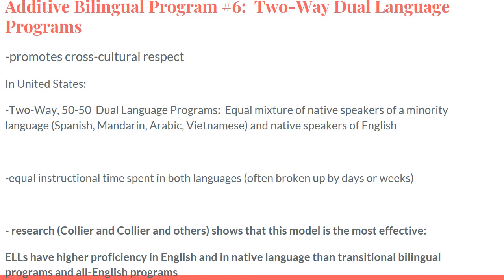These programs promote cross-cultural respect. An example is two-way 50/50 dual language programs with an equal mixture of minority language native speakers — such as Spanish, Mandarin, Arabic, or Vietnamese — and native English speakers, with equal instructional time in both languages. That time is often broken up by days or weeks: for example, Monday, Tuesday, and half of Wednesday as English days, and the afternoon of Wednesday, Thursday, and Friday as Spanish days — or alternating weeks of English and Spanish.